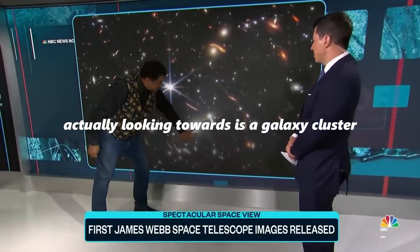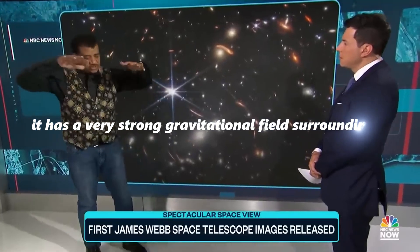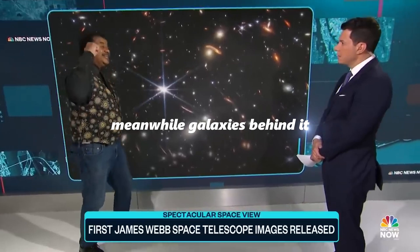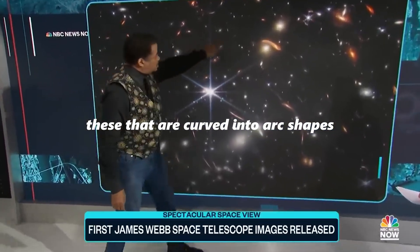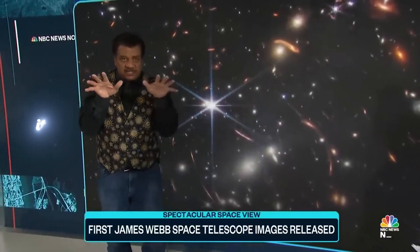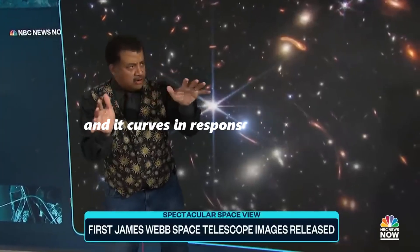We're actually looking towards a galaxy cluster halfway to the edge of the universe. It has a very strong gravitational field surrounding it. Meanwhile, galaxies behind it are curved into arc shapes. They're passing through the universe, minding their own business. It sees this distortion in the fabric of space and time and curves in response to it.